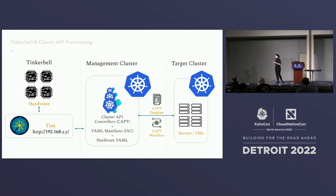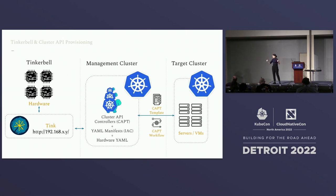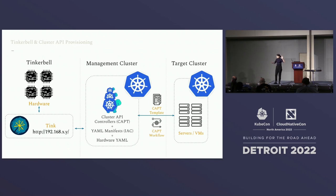On the management cluster we also need our infrastructure as code — the definition of our infrastructure. For example, we want a cluster with seven nodes, three in the control plane and four in the data plane. In addition, we have a hardware YAML as well. Because if Tinkerbell is aware of 10 Raspberry Pi machines, you might want to use only seven of them as part of the Kubernetes cluster, so you specify which machines are available for Cluster API to use to bootstrap the cluster.